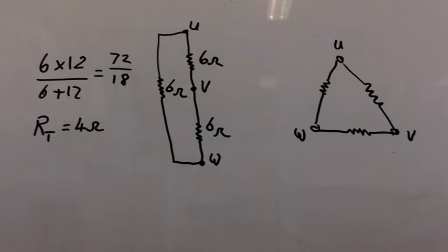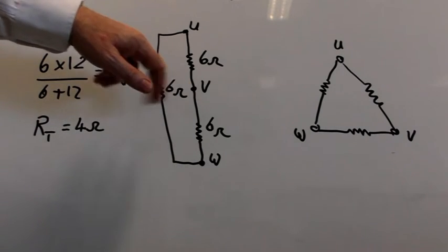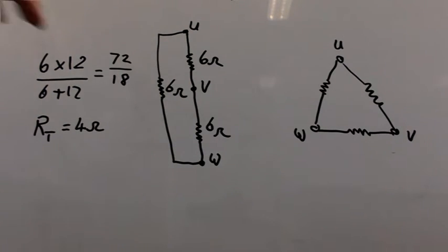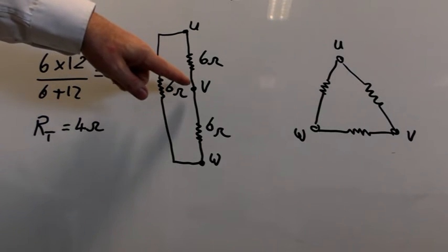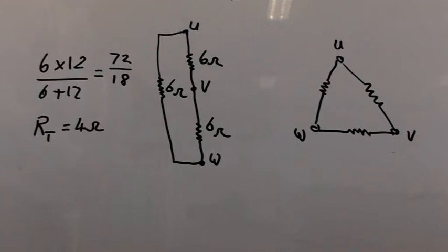So if I put my meter, multimeter across U and V then I would read 4 ohms. If I put my meter across V and W I would read 4 ohms and if I put my meter across U and W again I would read 4 ohms.